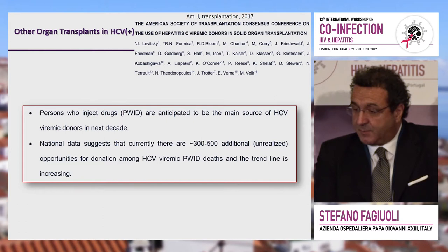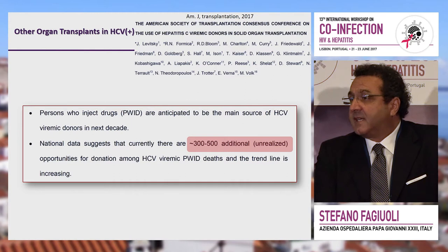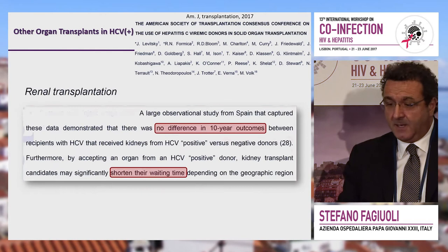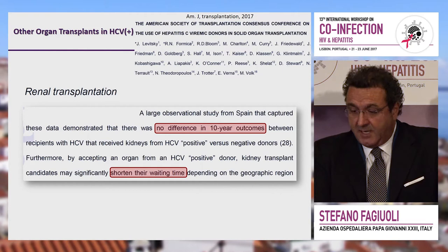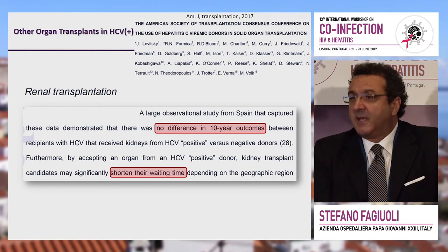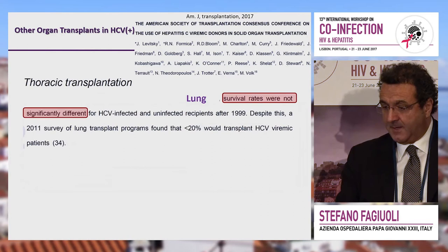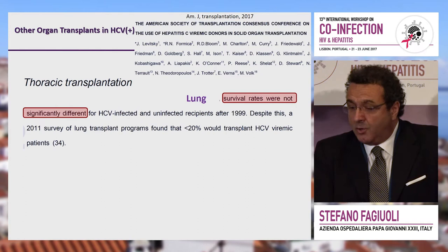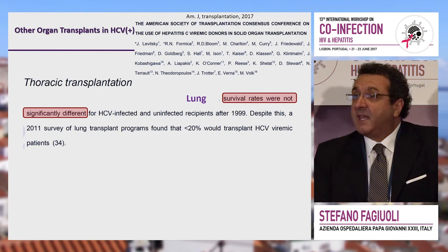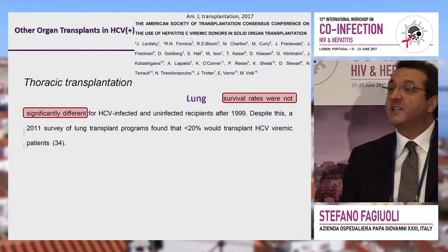Another consensus from the American Society of Transplantation estimated that in the United States up to 500 more organs could be used — which is a lot. For kidneys, there is no difference in 10-year outcomes using HCV positive organs, and waiting time can drop dramatically from 3.6 years to just 9 months. For lung transplantation, small series report no difference in survival, but the numbers are very small and fewer than 20% of centers would use a positive organ — an attitude that needs to change.